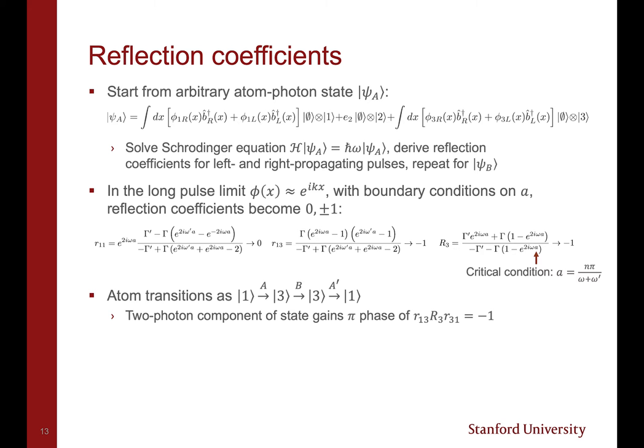To derive these reflection coefficients, we start from an arbitrary atom-photon state ψ_A. Solving the Schrödinger equation for ψ_A using the Hamiltonian from the previous slide, we derived reflection coefficients for left and right propagating pulses, and we did the same for ψ_B.